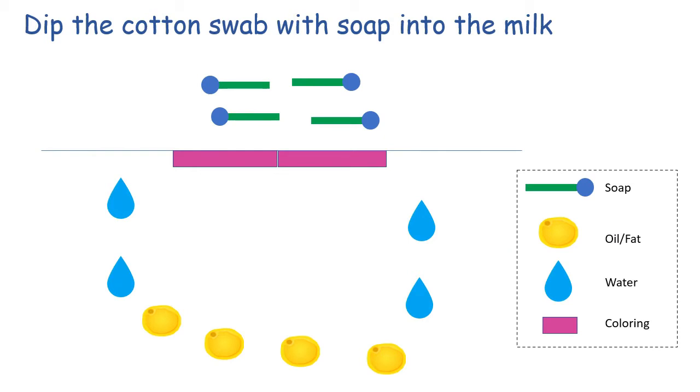Next, this picture demonstrates when we dip the cotton swab with soap into the milk. As we know, apart from the water as represented with blue dots, milk consists of fat and oil, which is illustrated with the bigger yellow dots.